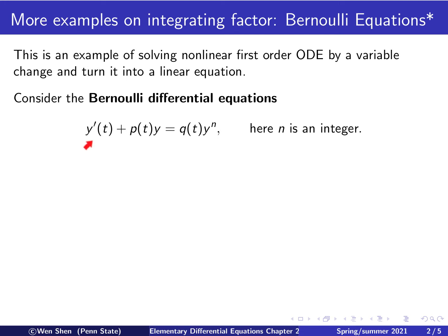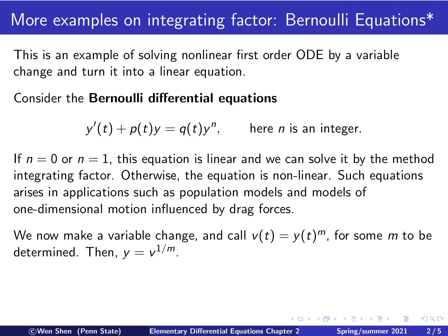y is the unknown. It is a function of t. y' plus p(t)y equals q(t) times y to the power n. And here n is an integer. We see that the left-hand side is a linear expression in y. But the right-hand side, y to the power n, is in general non-linear.